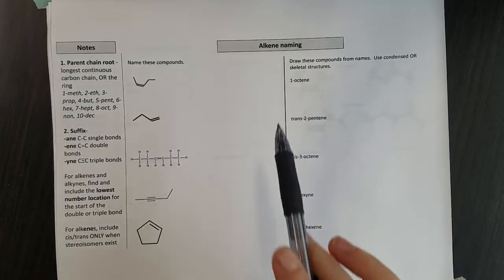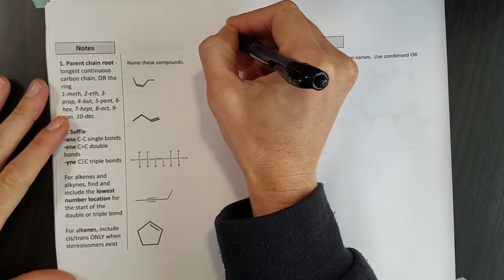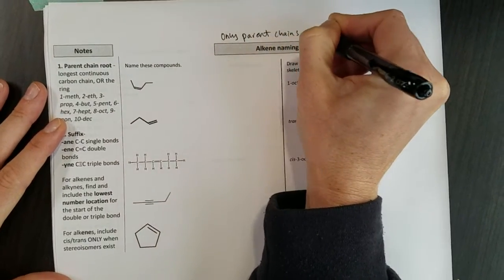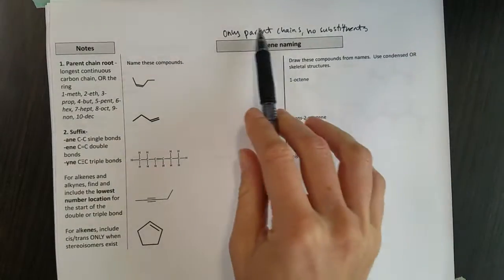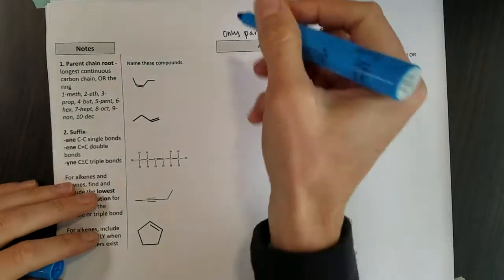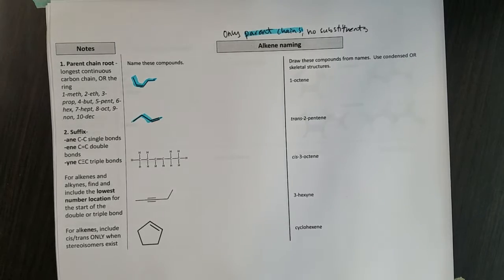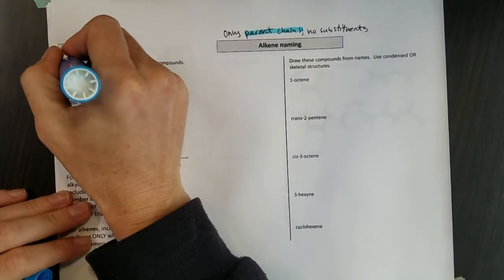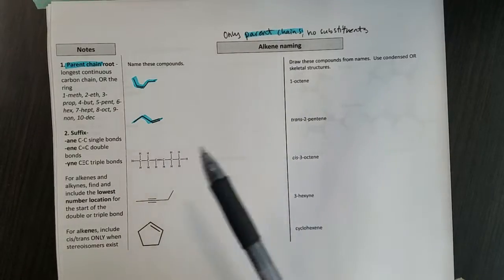We're going to take a look now at very basic rules for naming alkenes. In our class we're going to look at molecules that only have parent chains and don't have substituents. So we're keeping it pretty basic here in terms of what we're looking at. Just parent chains which we had colored blue in a previous chapter. So when you see these molecules you'll notice it's all parent chain, there's no substituents coming off of those.